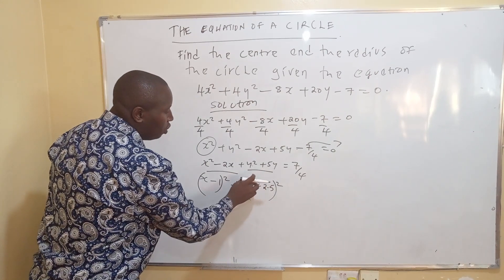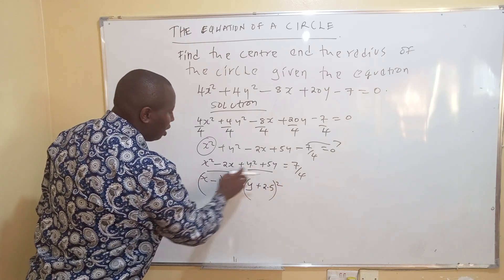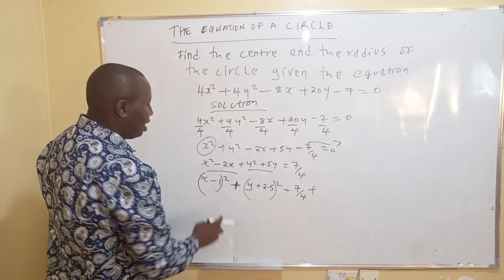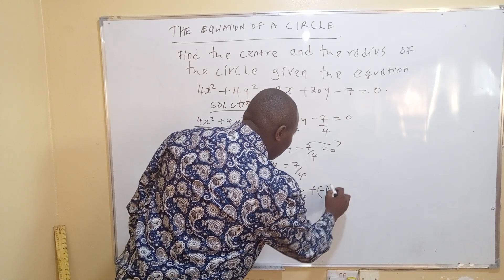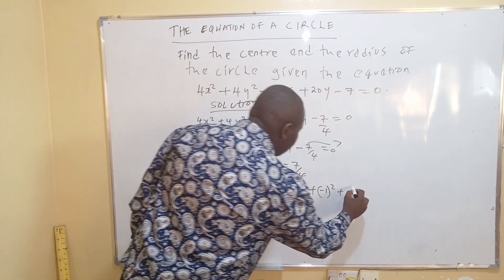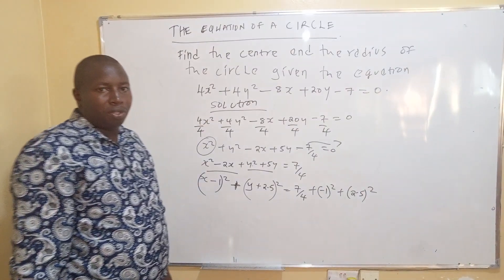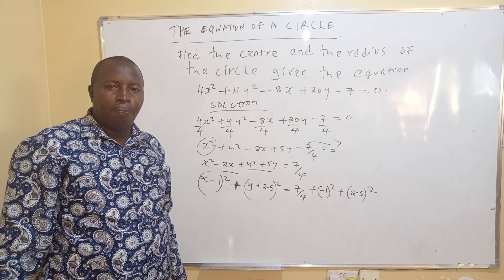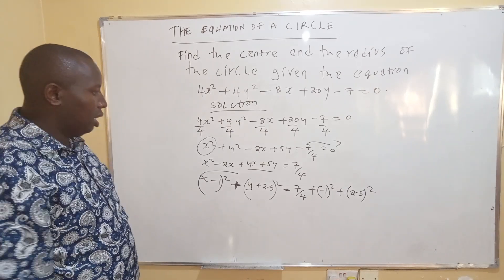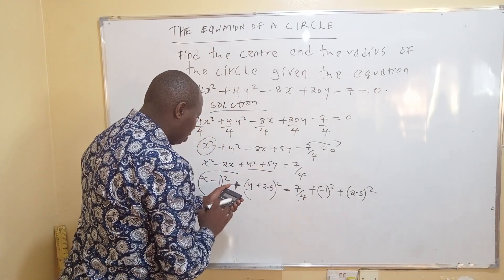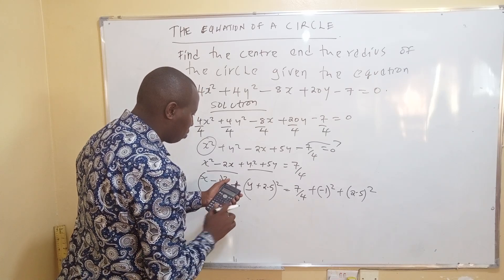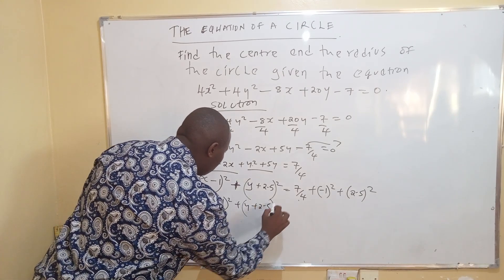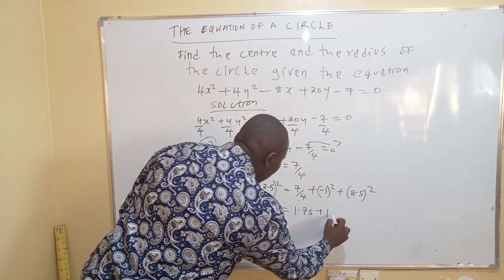By completing the square you get (x minus 1) squared plus (y plus 2.5) squared equals 7 over 4 plus the values you added. 7 over 4 is 1.75, plus 1 (from minus 1 squared) plus 6.25 (from 2.5 squared), giving (x minus 1) squared plus (y plus 2.5) squared equals 9.